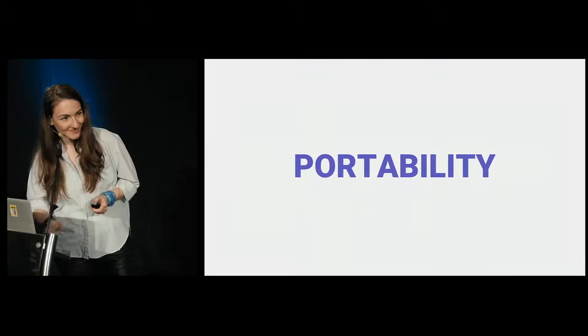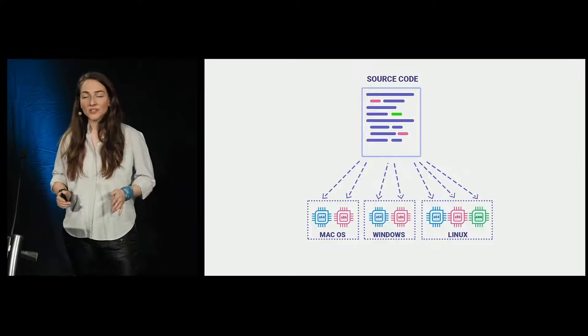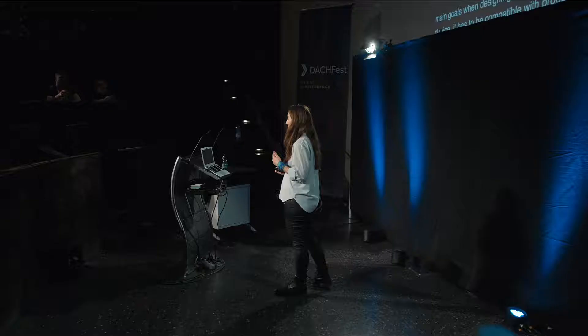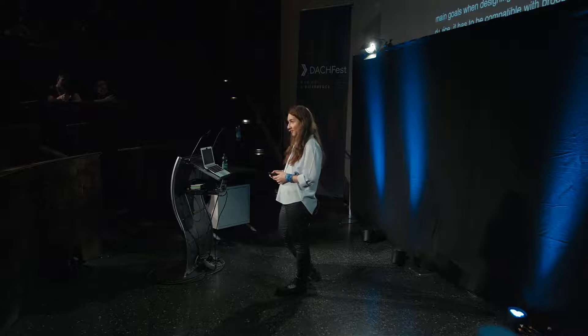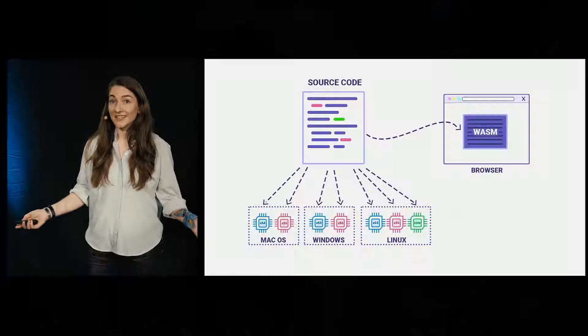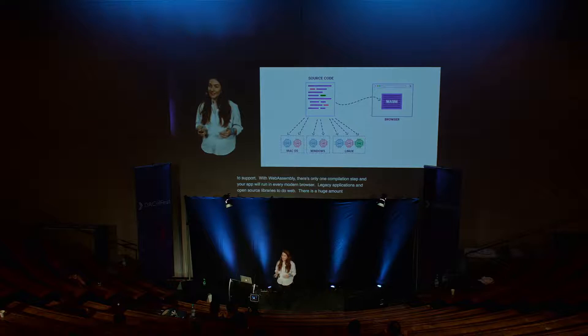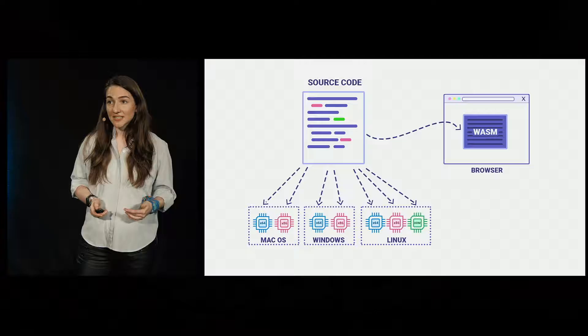Let's talk about portability. This was one of the main goals when designing WebAssembly. To run an application on a device, it has to be compatible with the device's processor architecture and operating system, meaning you'd have to compile the source code for every combination of OS and CPU architecture you want to support. With WebAssembly, there's only one compilation step and your app will run in every modern browser. A good use case is porting legacy applications and open-source libraries to the web. There is a huge amount of C++ libraries and open-source applications out there, and now with WebAssembly you can make it all available on the web. C++ specifically is a language supported on practically every platform, including iOS and Android, which means you could use it as a common language for both web and mobile deployments.